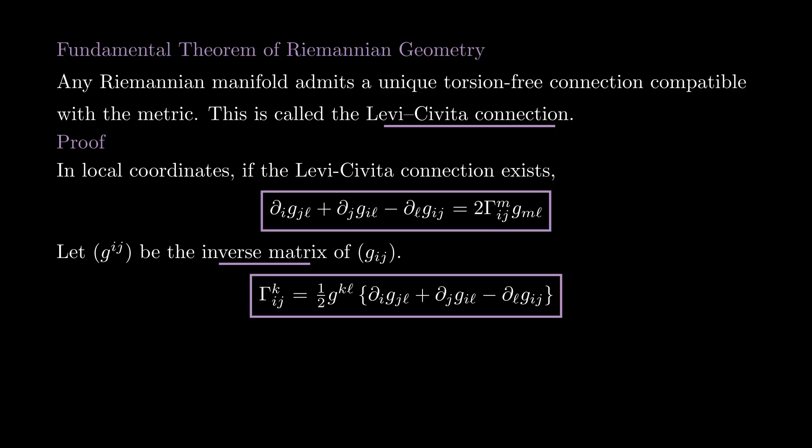And that's it for this lesson. We defined what a connection is and learned what the Christoffel symbols are, we learned how to construct the covariant derivative and parallel transport along a curve using a connection, and we showed that any Riemannian manifold has a unique connection that is both compatible with the metric and torsion-free. In future lessons, we will use the Levi-Civita connection to obtain geometric information about Riemannian manifolds. Thank you for watching and see you next time!